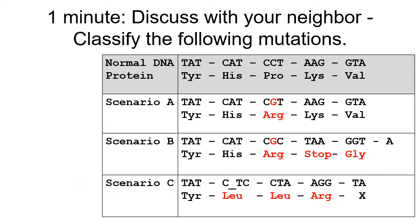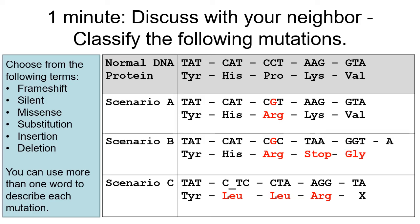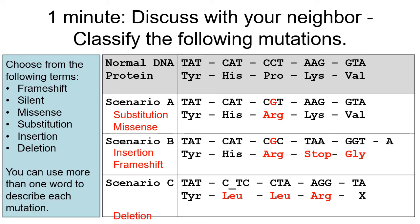Let's do a little review. For scenario A, this is an example of a missense substitution mutation. For scenario B, this is an insertion and frameshift mutation. For scenario C, this is a deletion and frameshift mutation.